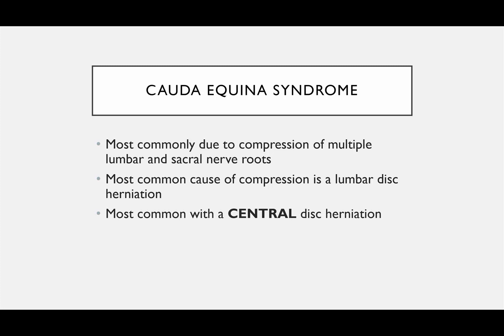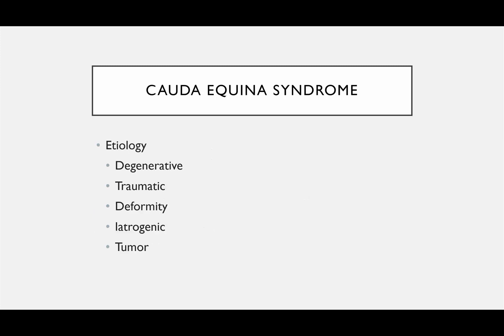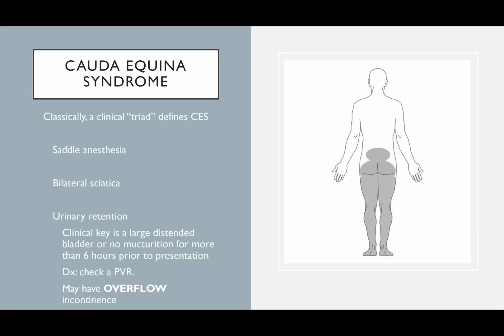The most common cause is a central lumbar disc herniation, more frequent in males in the fourth decade, frequently at the L4-5 level. Causes can be degenerative, traumatic from disc herniation, due to deformity, fracture, iatrogenic treatment, or a tumor. You classically get a clinical triad of saddle anesthesia, sciatica, and urinary retention. The key finding is a large distended bladder or no micturition for more than six hours prior to presentation. Check a post-void residual—if the patient has overflow incontinence or retention, you should be concerned.